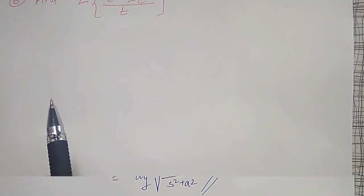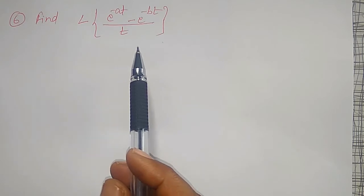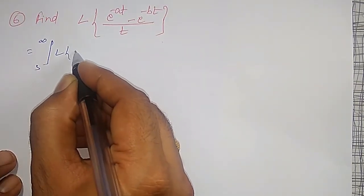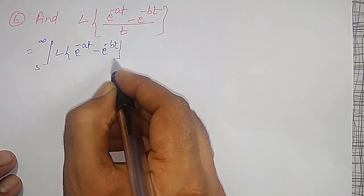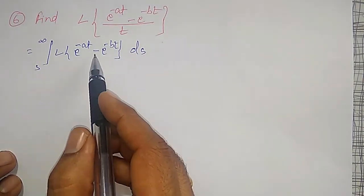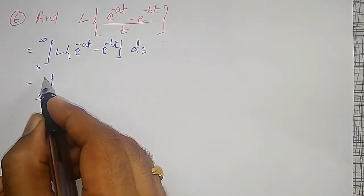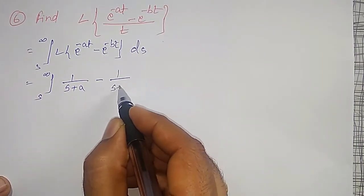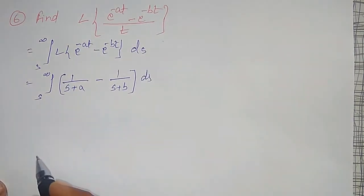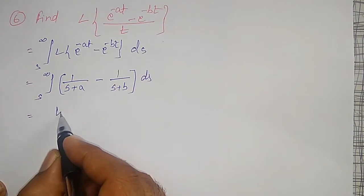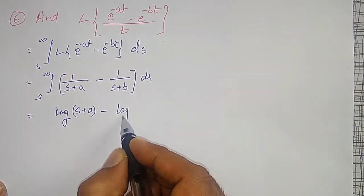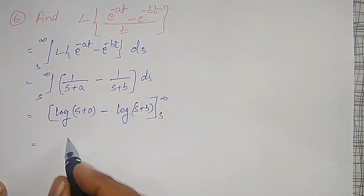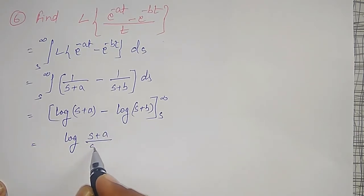Next example: find the Laplace Transform of e to the power minus at, minus e to the power minus bt, divided by t. Again, divided by t transforms as integration from s to infinity of the Laplace Transform of e to the power minus at minus e to the power minus bt, ds. The Laplace Transform of e to the power minus at is 1 over s plus a, and e to the power minus bt is 1 over s plus b. Integrating gives log of (s plus a) minus log of (s plus b), which by log property is log of (s plus a) divided by (s plus b), between limits s to infinity.